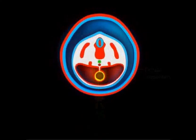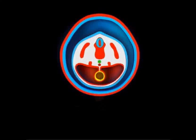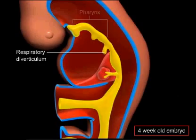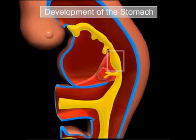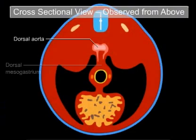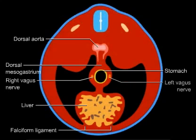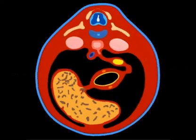The foregut extends from the pharynx to the second part of the duodenum. During the fourth week of gestation, the rudimentary stomach appears as a fusiform-shaped dilation of the distal foregut. Subsequently, its appearance and position drastically change. This can be better understood by visualizing a longitudinal axis and an antero-posterior axis around which the stomach rotates. The stomach rotates 90 degrees clockwise around its longitudinal axis.